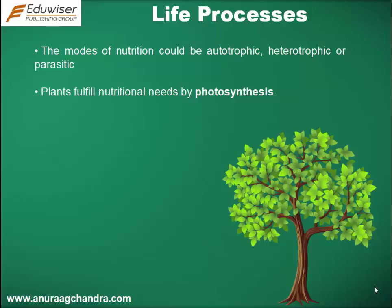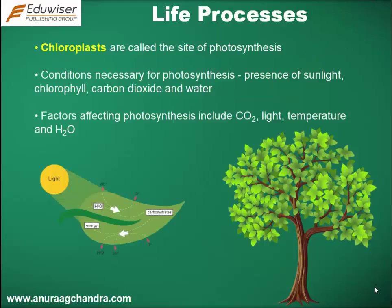The modes of nutrition could be autotrophic, heterotrophic, or parasitic. Plants fulfill nutritional needs by photosynthesis. Chloroplasts are called the site for photosynthesis. Conditions necessary for photosynthesis include presence of sunlight, chlorophyll, carbon dioxide, and water.